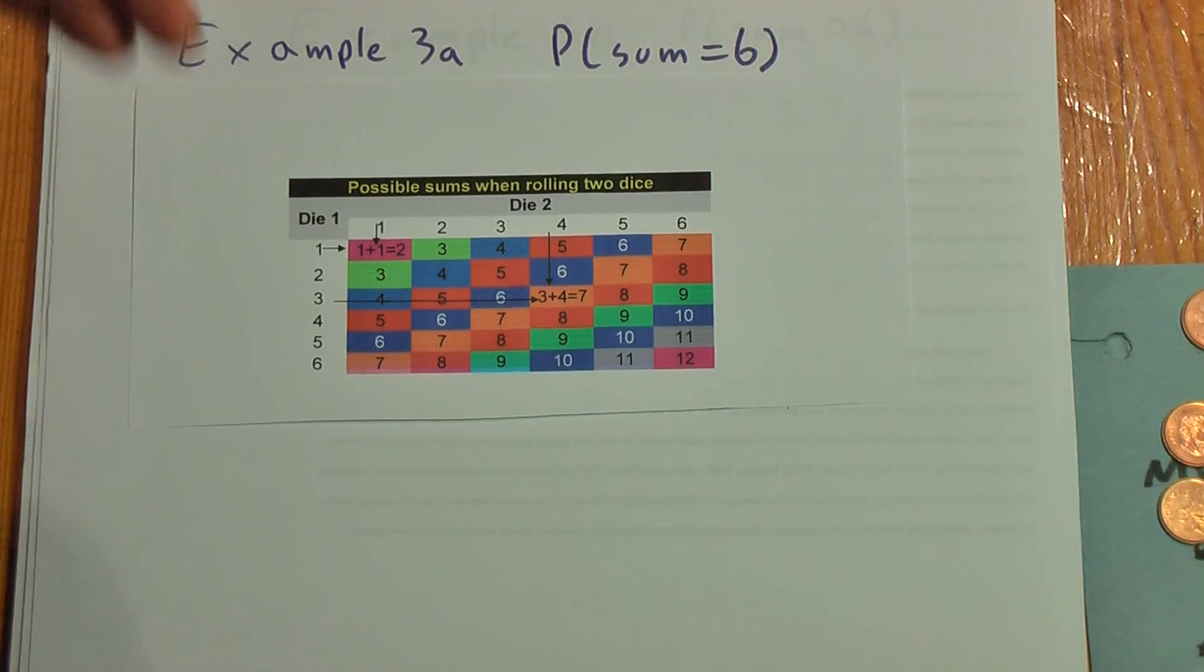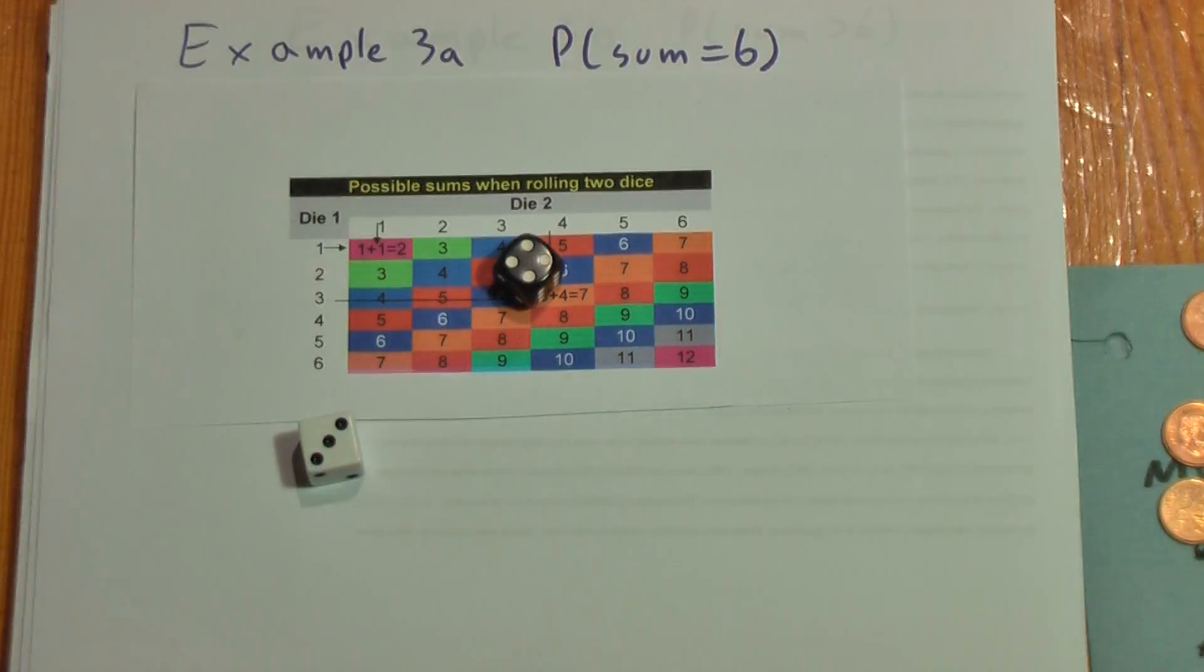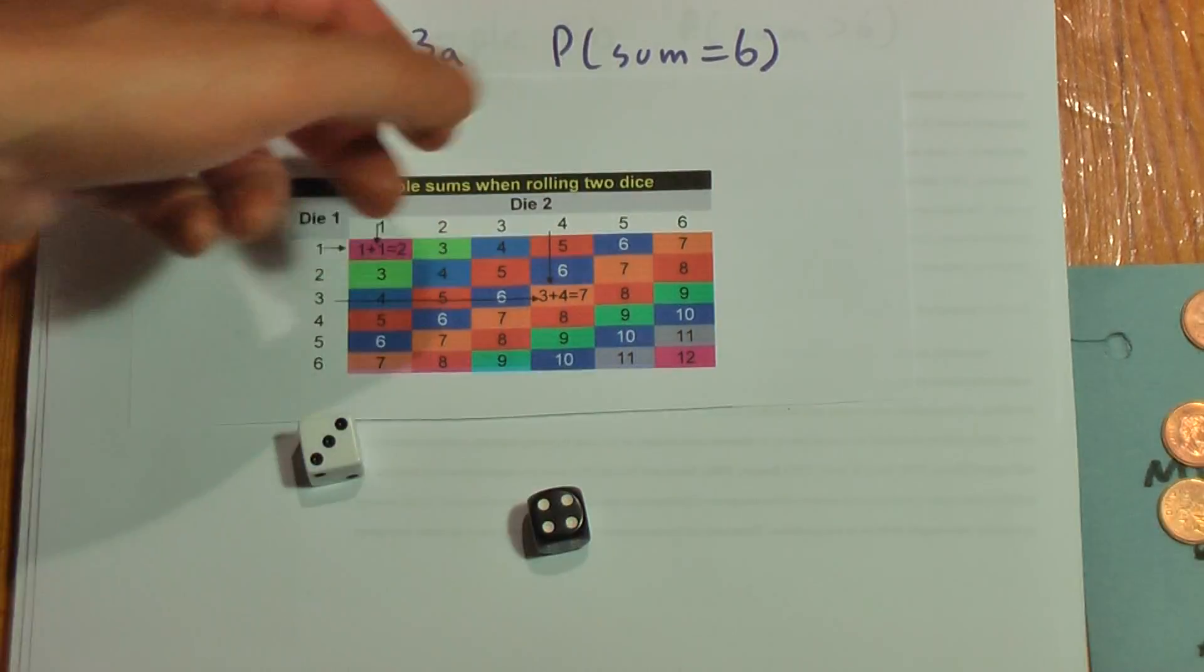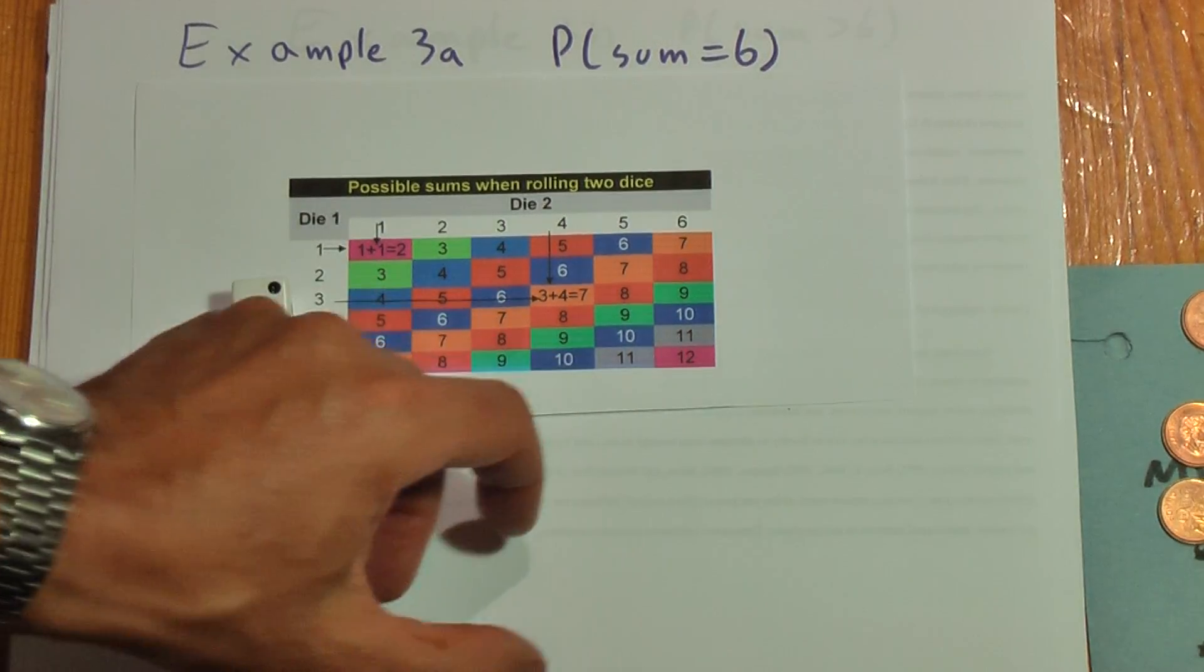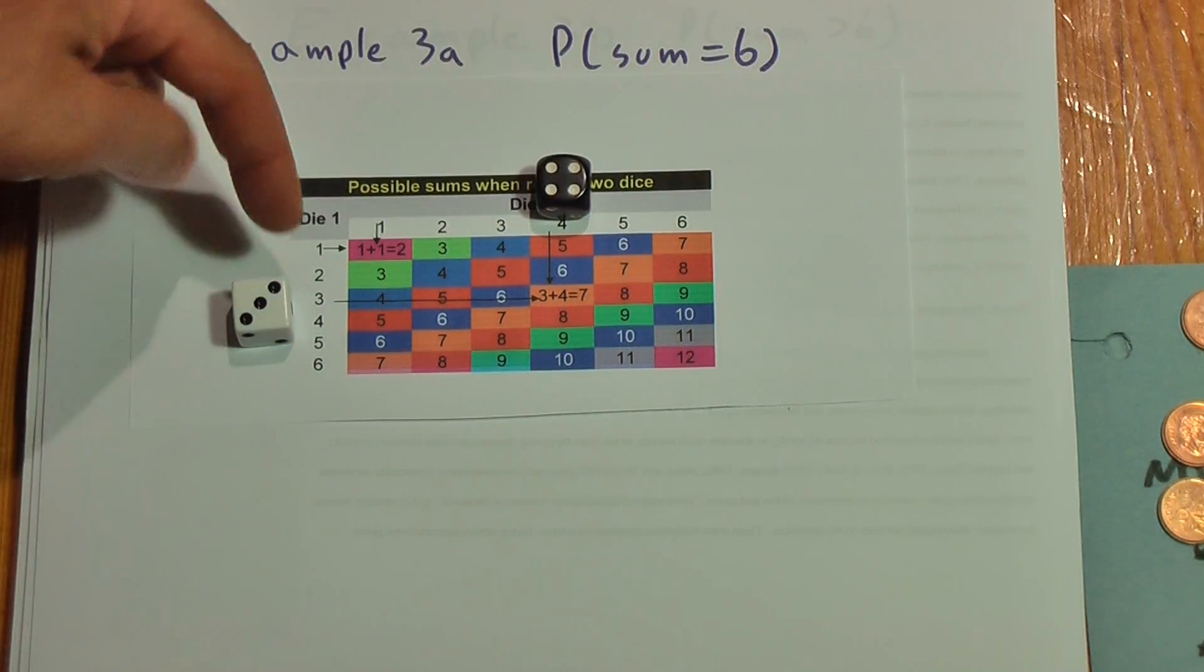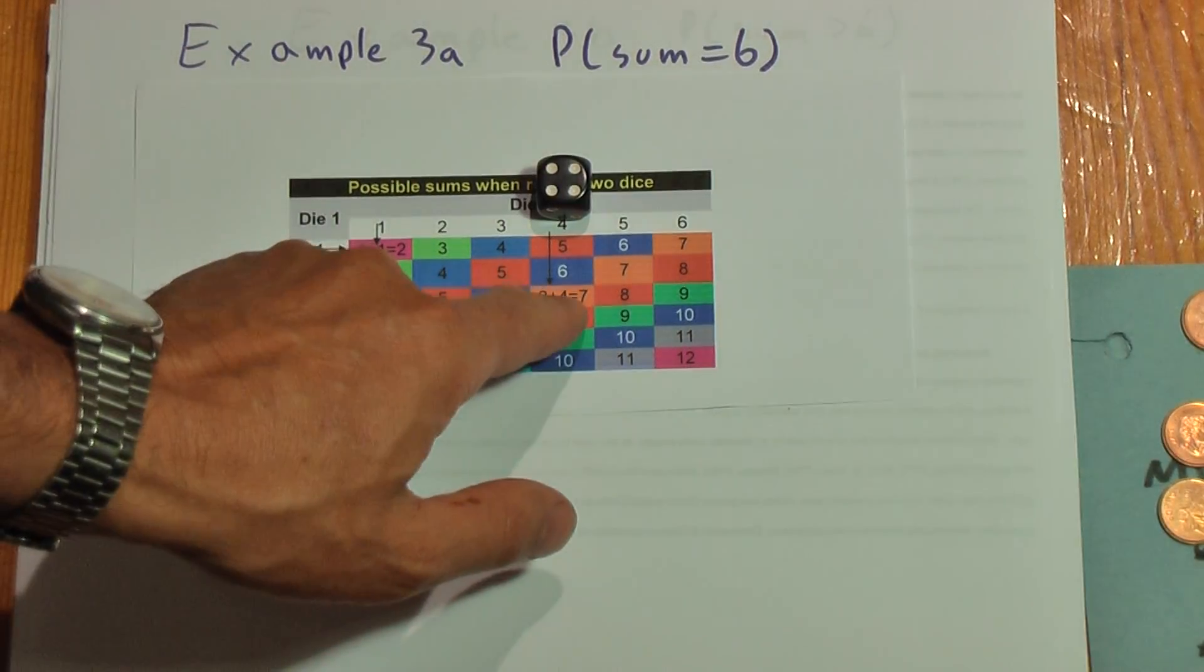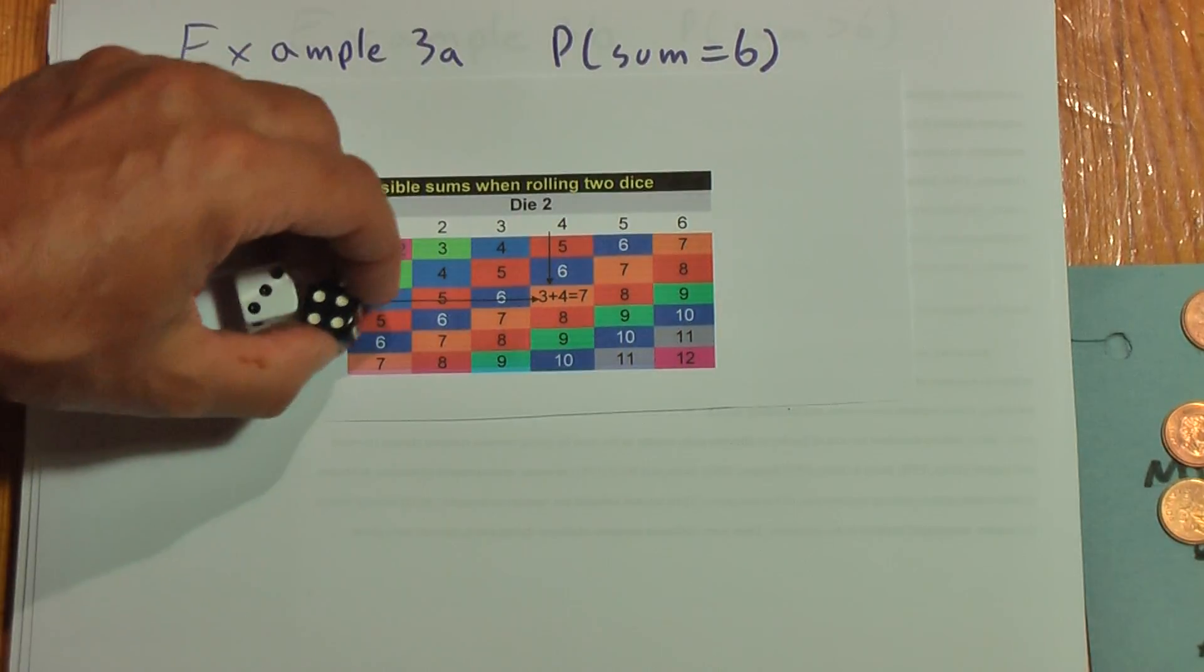And so I'll demonstrate for you. We'll call this one die 1, and we'll call the black die die 2. If I roll them together, they make a score of 7. But I get a 7 from a 3 on die 1, which is the white die, and a 4 on die 2, which is the black die. So I take 3 across. 3 plus 4 equals 7. That's how this works.